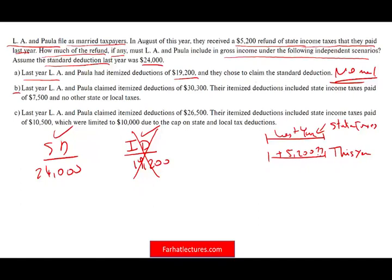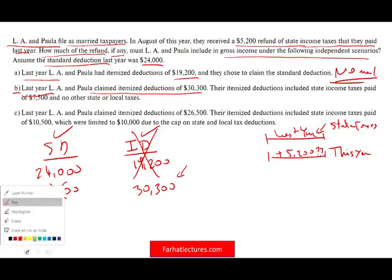Scenario B. Last year, they claimed itemized deductions of $30,300. The standard deduction is $24,000. Obviously last year they took advantage of their various itemized deductions and did not use the standard deduction — because their itemized deduction is $30,300. Now we have to find out whether the $5,200 is taxable or not. It could be taxable because when they computed their itemized deductions, that $5,200 overpayment is included.